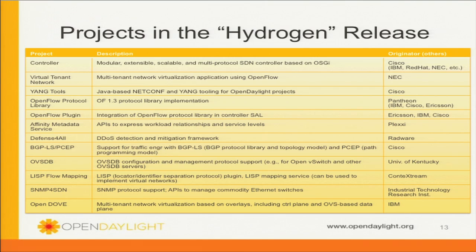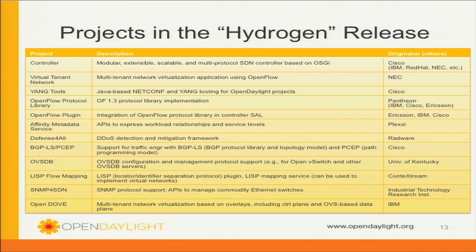Defense for All is a distributed denial-of-service attack application to detect and mitigate denial-of-service attacks. We also have BGP-LS and PCEP for protocols, as well as OVSDB for configuration of virtual switches and Open vSwitch. There's LISP flow mapping for doing Location Identifier Separation, which is a good protocol for service chaining, as well as SNMP for SDN — doing basic management programming through SNMP, which is a pretty common denominator for legacy devices. Last but not least is Distributed Overlay Virtual Ethernet, or Open DOVE — an overlay technology that is particularly applicable to OpenStack environments.